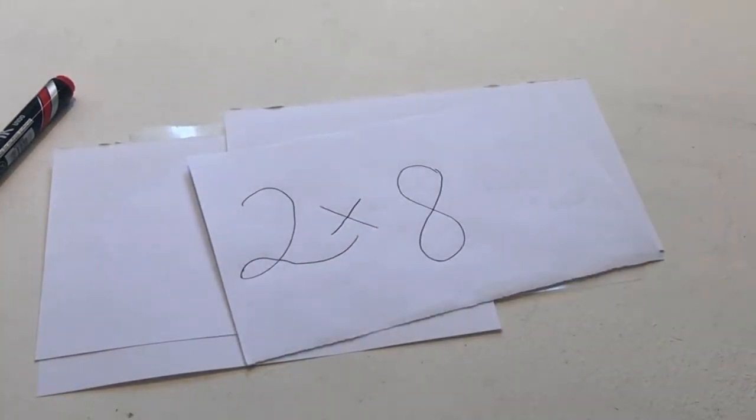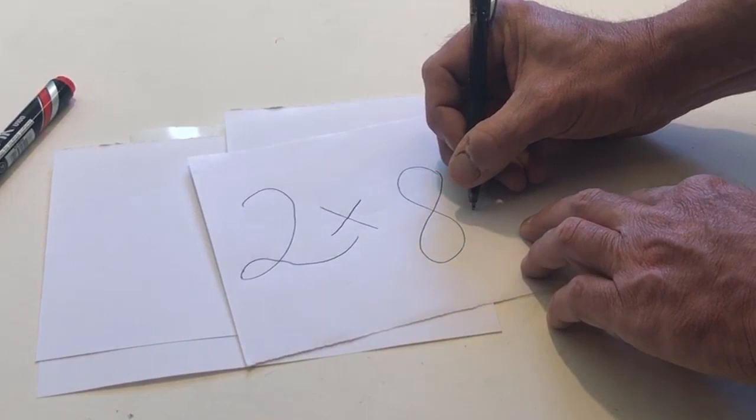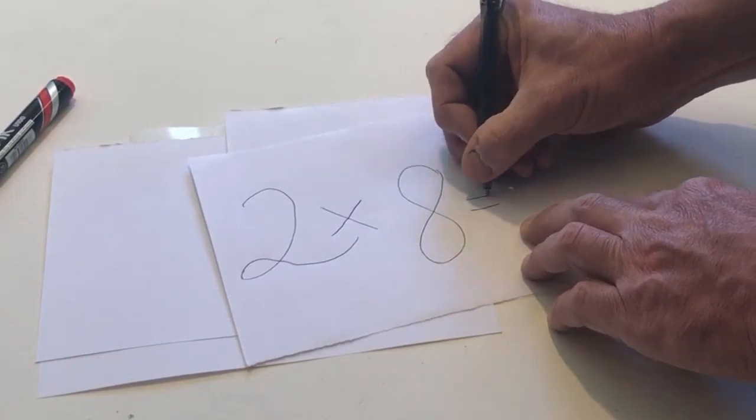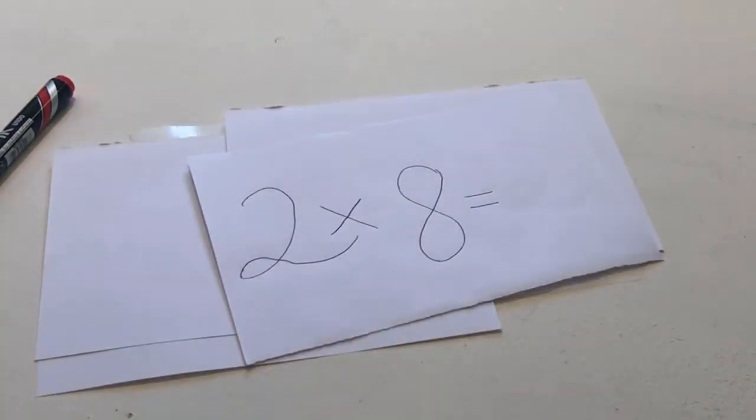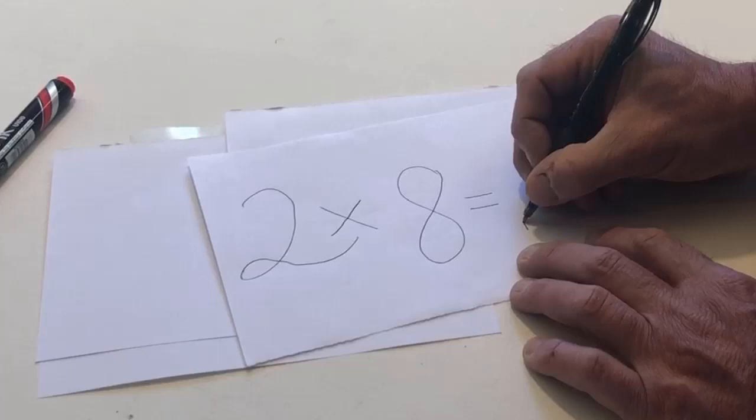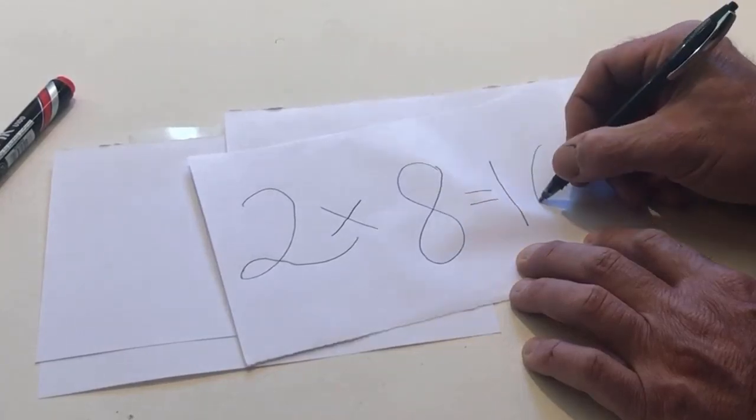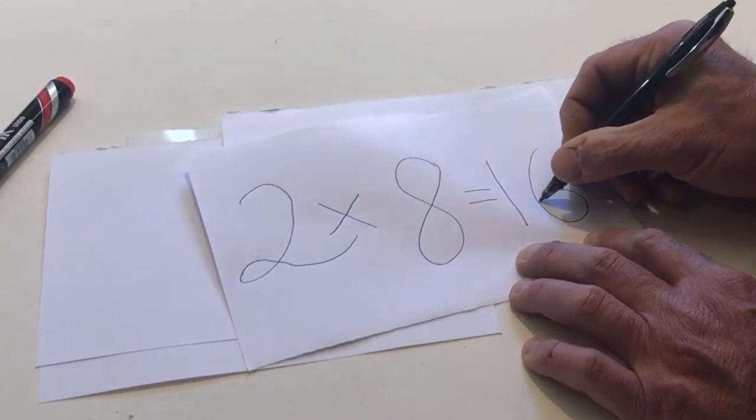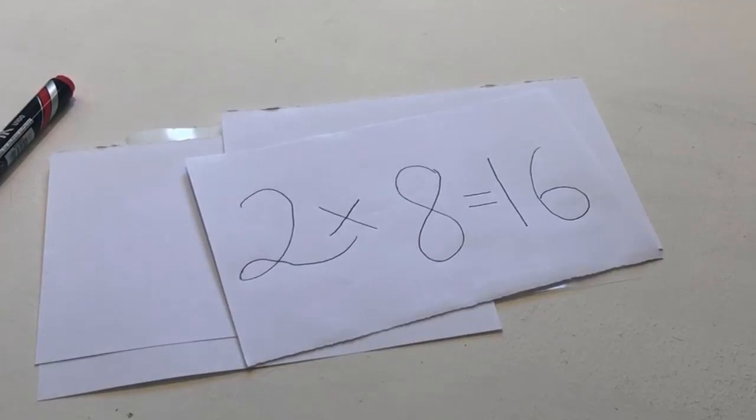After the number 8, write an equals sign. Multiply 2 by 8 and write your answer after the equals sign. Draw a circle around your answer.